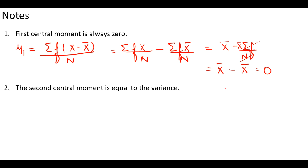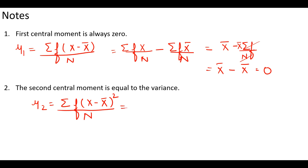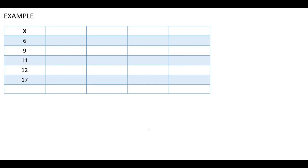The second property says that the second central moment is equal to the variance. That is quite obvious because μ2 equals summation of f times (x minus x-bar) squared upon n, and we know this is equivalent to variance. So somewhere we can say that we are already using these moments, although we don't know that these are central moments. Now let's look at a few examples.